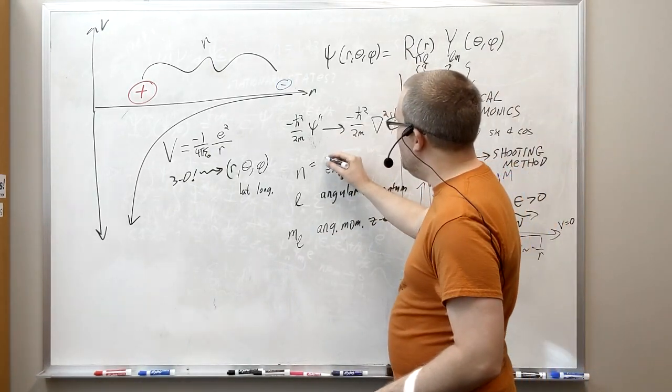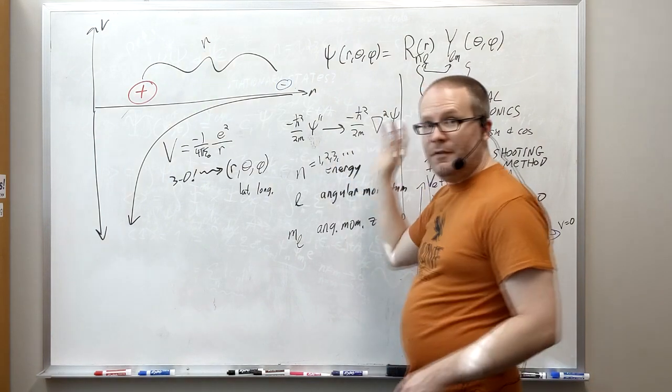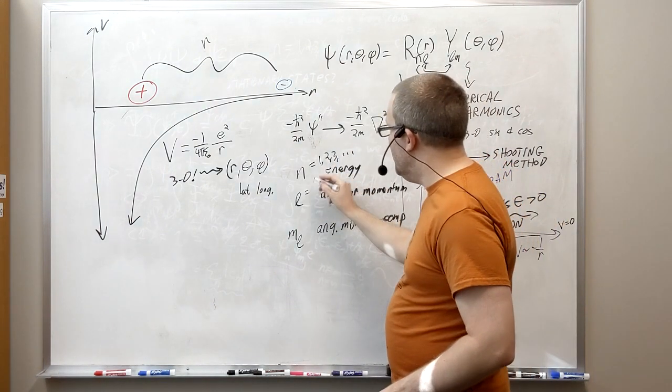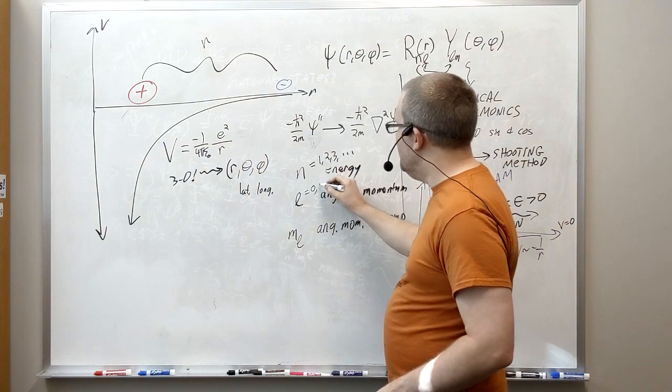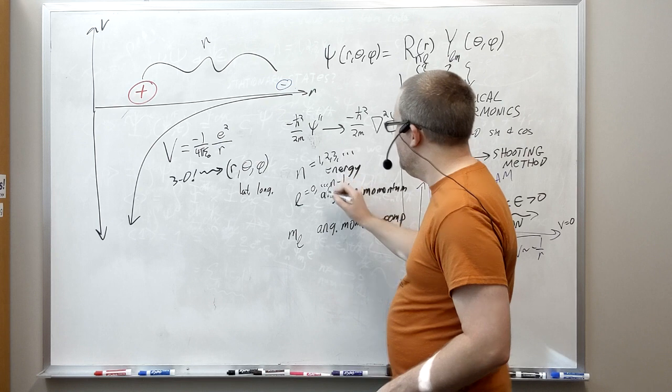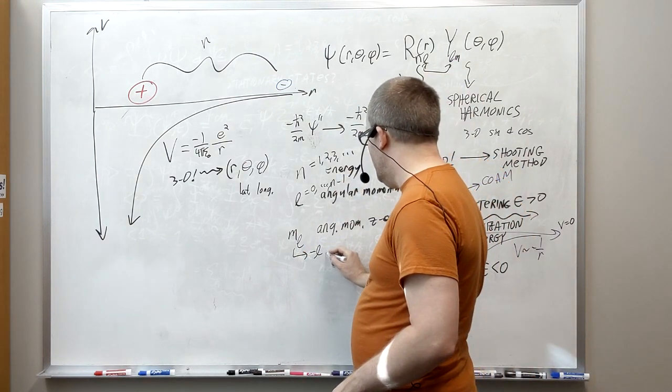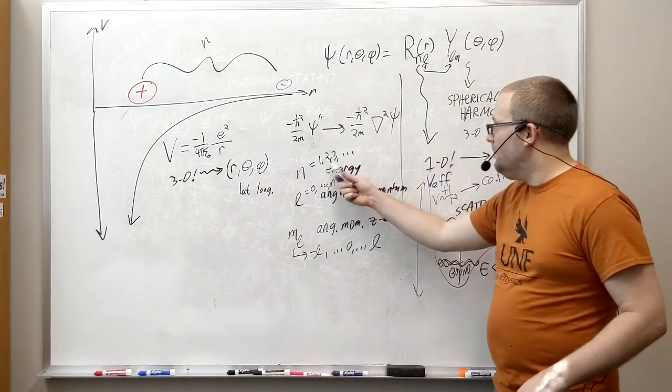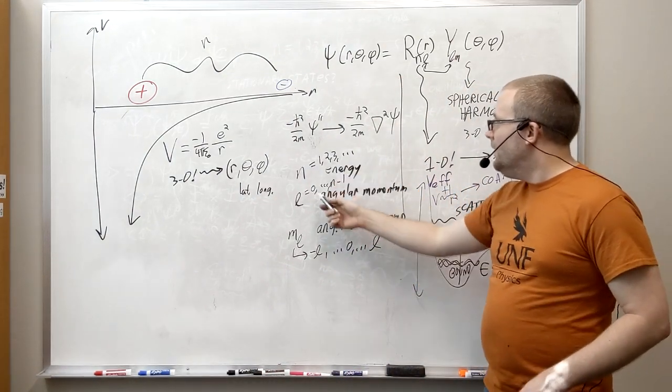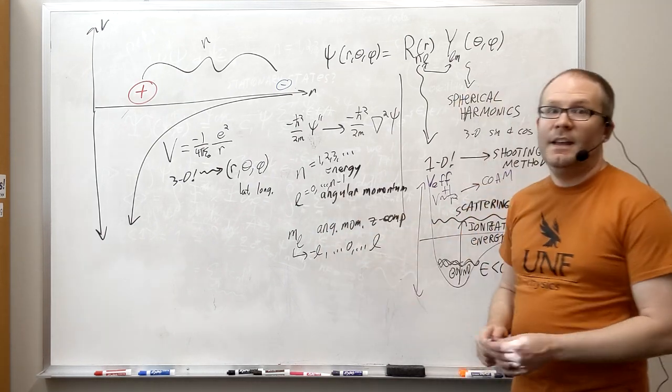This n value can go anywhere from 1, 2, 3, up to infinity. This l value can go anywhere from 0 up to n minus 1. And this ml value can be anything from negative l up to 0 up to l. They're all integers.